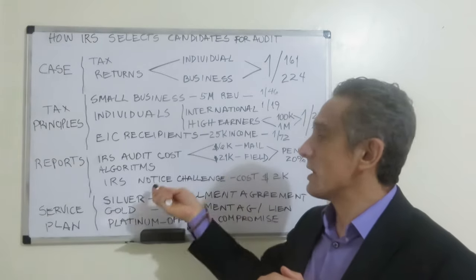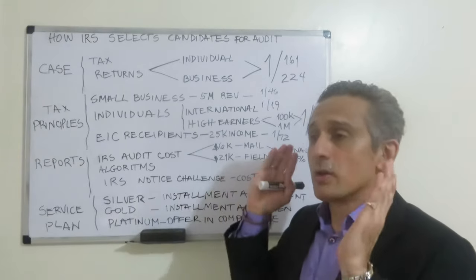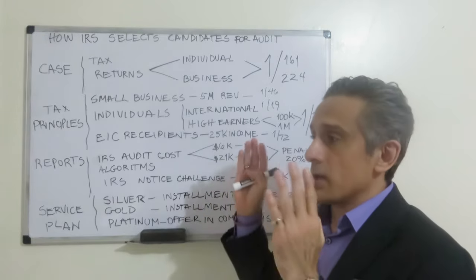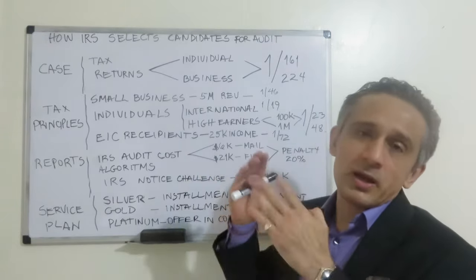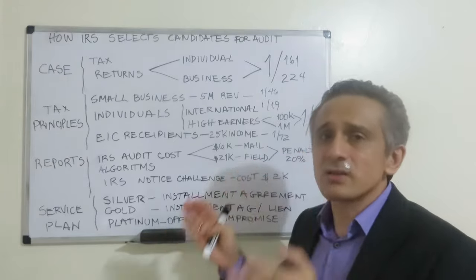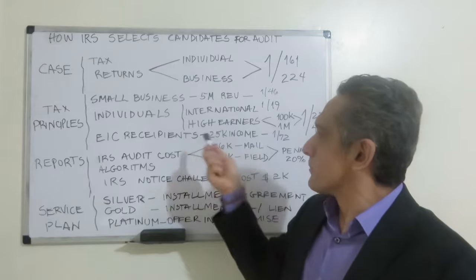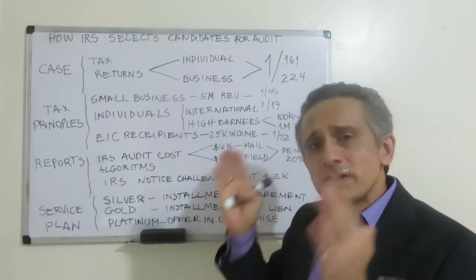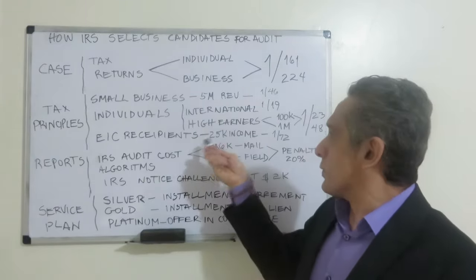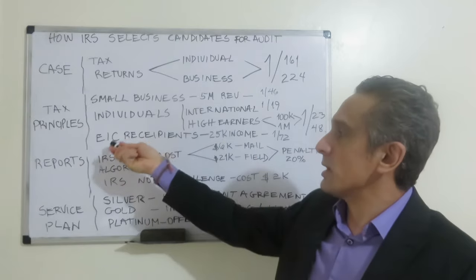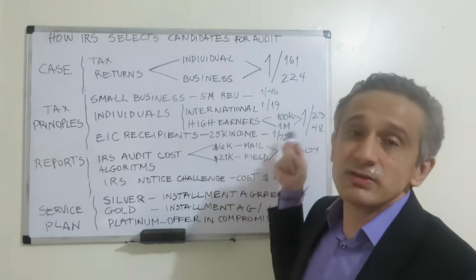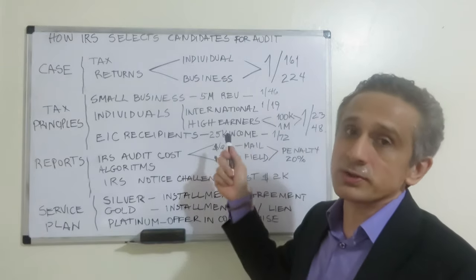The IRS is now sending notices to people who are not proving their income with a 1099 but are reporting income, pursuing these taxpayers to reduce fraud. For those claiming Earned Income Credit with less than $25,000 of income, out of every 72 returns, one will be audited.